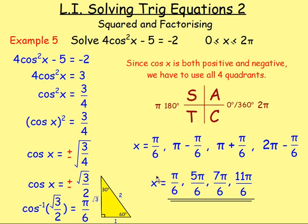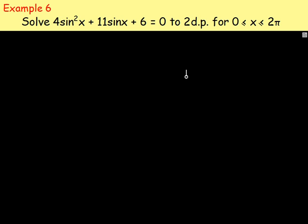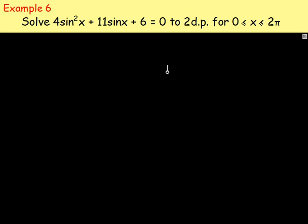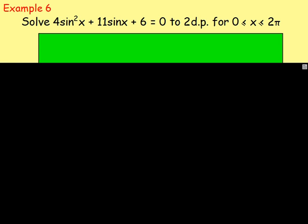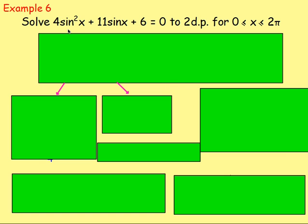Those are your four possible answers — we have four answers because it could be the positive or the negative. That's how you solve a trig equation when you've got cos squared. Example number six: solve 4sin²x plus 11sinx plus 6 equals zero, to two decimal places, for x between zero and two pi. This time we're asked for decimal places but it's in radians, and we've got sine squared, then sine, then a number — that's going to be difficult to rearrange into just sine x equals.